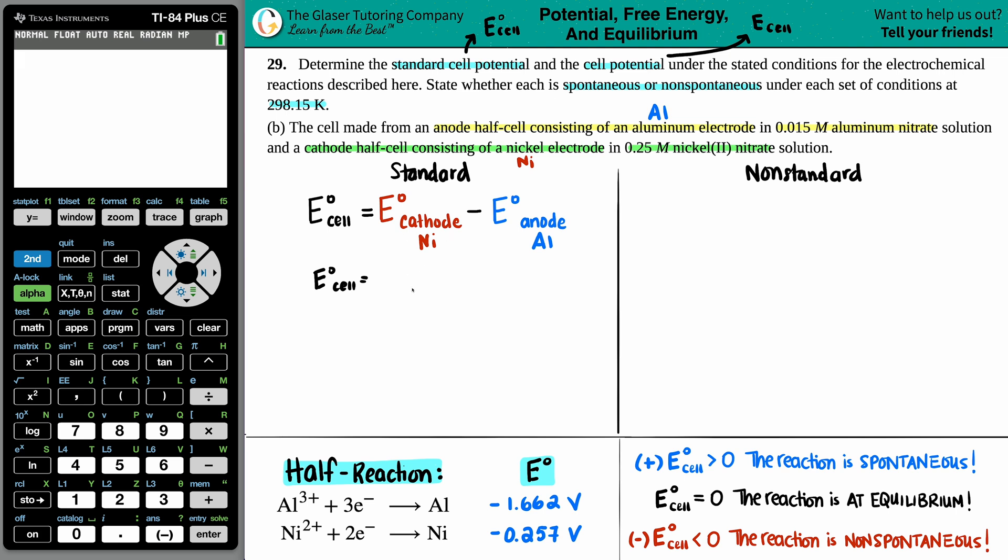So the cathode is the nickel one. That's the negative 0.257. And I'm going to subtract that with the aluminum E value, so negative 1.662. And all we have to do is just subtract these two. And we get negative 0.257 minus a negative 1.662. And those values look good. So we have 1.405 volts is the unit. And that's your standard cell potential.